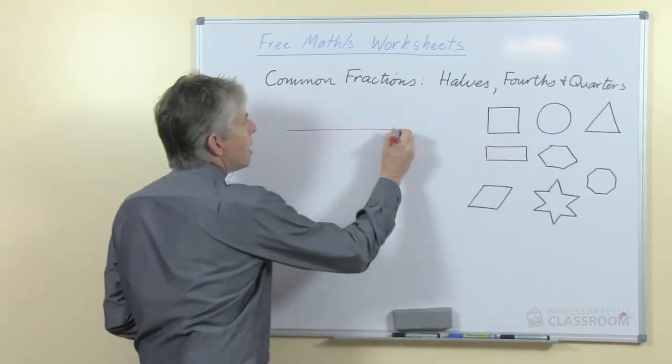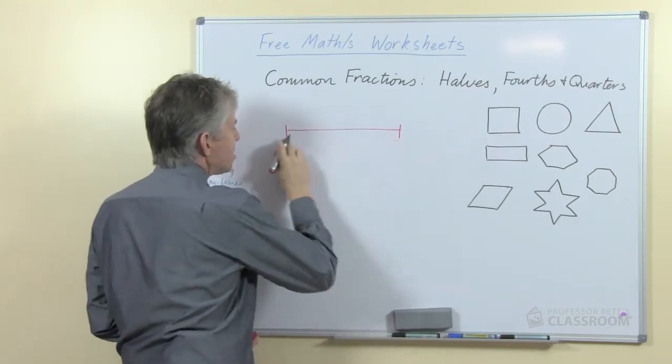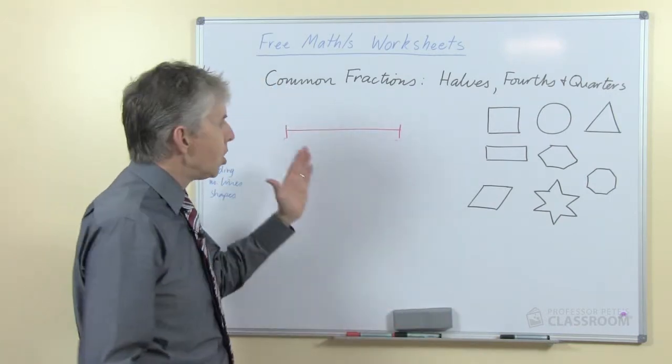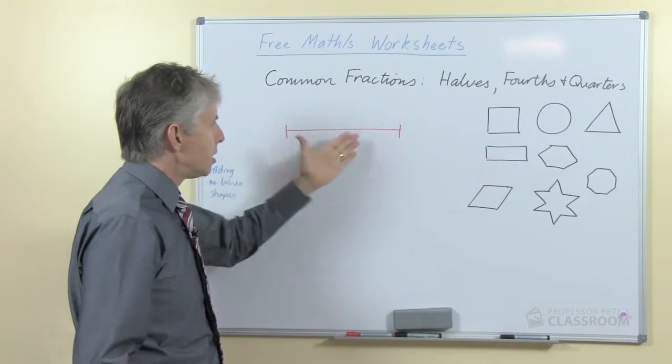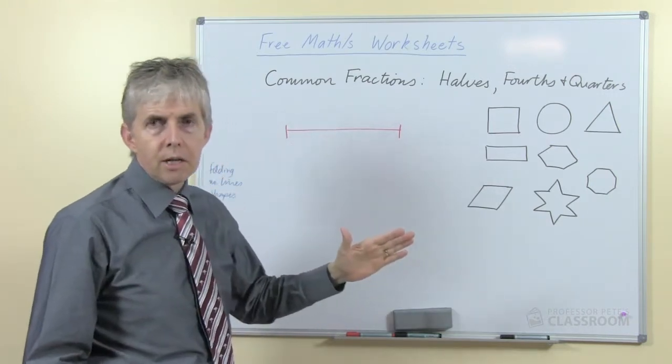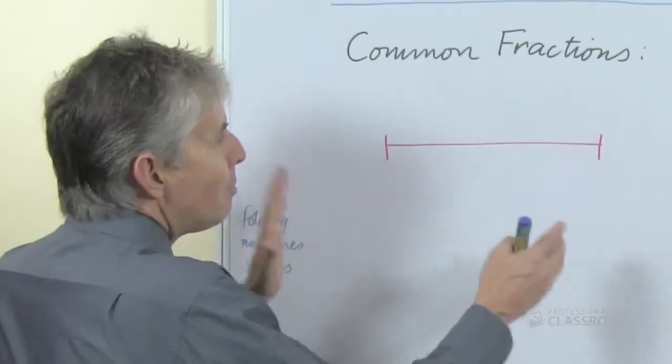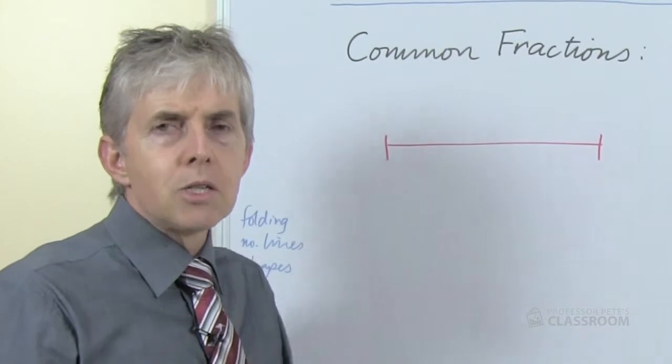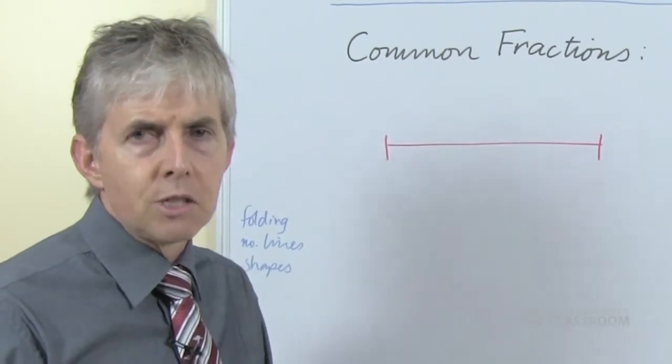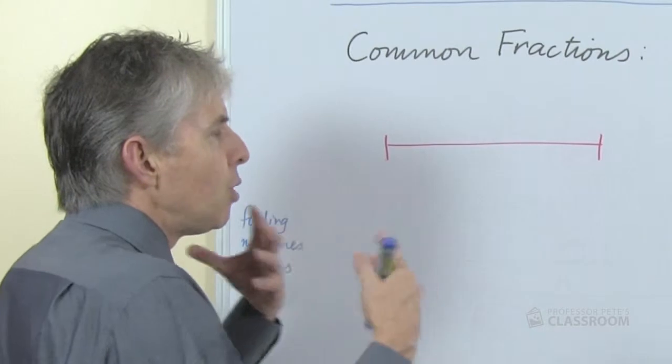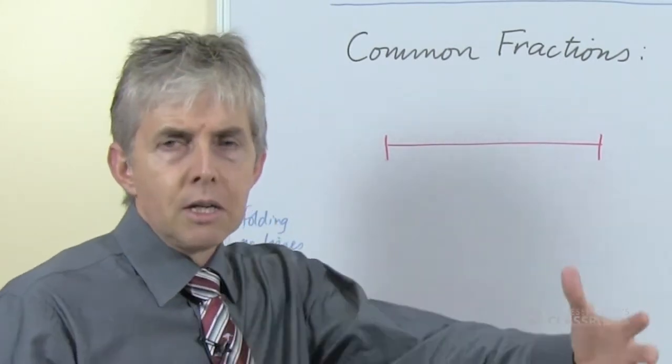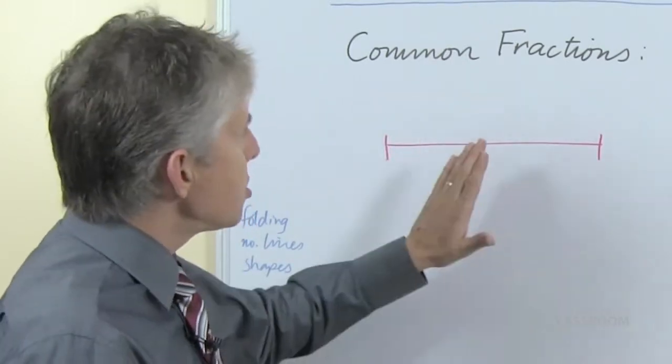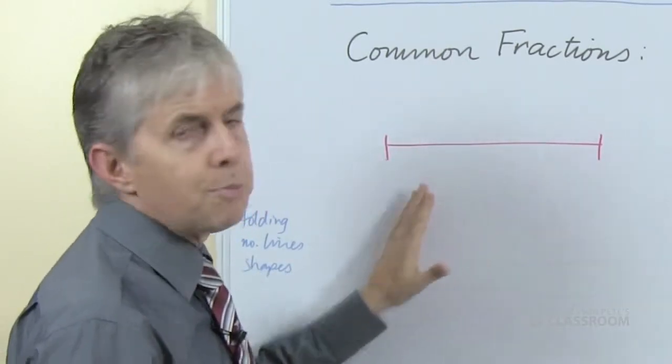Another one is to use number lines. It's a fairly common activity to start with a number line and ask students to identify where they believe certain numbers would exist on the number line and we can use that for fractions. In number terms this would have to be 0 and this would have to be 1, but we're not really talking about that because this is for young children, they're not ready for the symbols. We'll leave the numbers off, but we want the students to find the midpoint of the line.